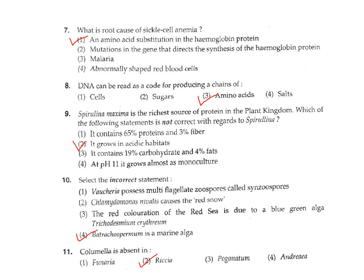Question 10: Select the incorrect statement. Option 1 — Vaucheria possesses multi-flagellate zoospores — correct. Option 3 — Chlamydomonas nivalis causes red snow — correct. Option 3 — Red coloration of the Red Sea is due to the blue-green alga Trichodesmium erythraeum — correct. Option 4 — Botryococcus braunii is a marine alga — this is incorrect because it is a freshwater alga.